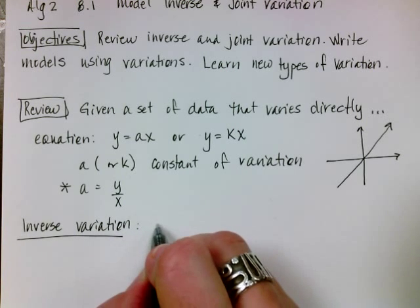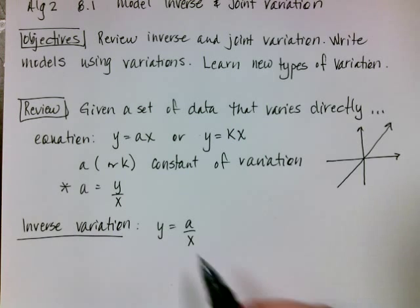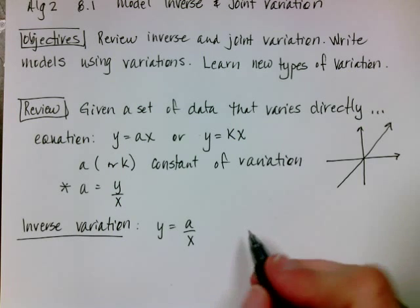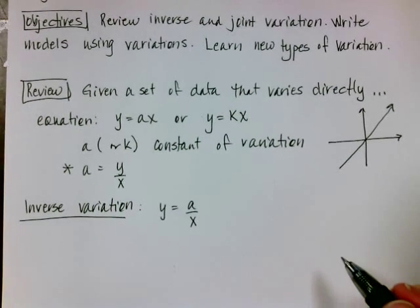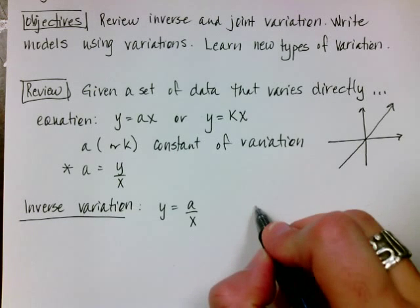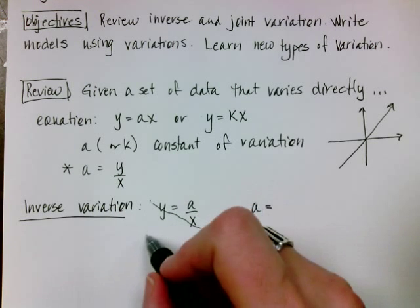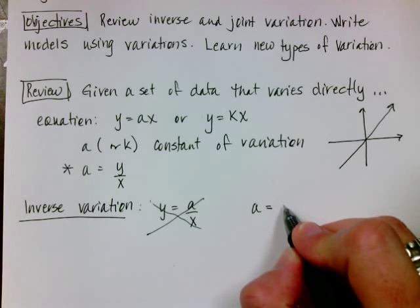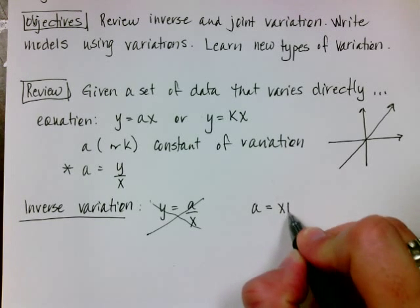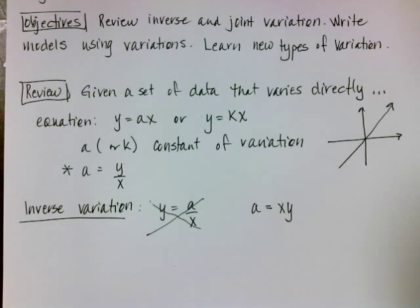My equation for inverse variation is y equals a over x. So again, a is the constant of variation, and then x is going to represent my data. I'm not going to show you the graph at this point. It's really cool, but that's what this whole chapter is going to be about. But I am going to show you that if I wanted to solve for a, I would cross multiply. a is going to get multiplied by 1, so I'm going to have that a equals xy. And I just like to put my variables in alphabetical order.